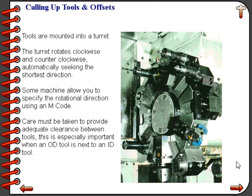It should be noted that a typical mistake most beginning programmers make is to select tool numbers based on their order of usage. For example, if their first tool is a turning tool they would call that tool 1, the second tool a drill and call it tool 2, and the third tool a boring bar called tool 3 — this is not the correct way to do it. You should try to pick dedicated stations on your turret for OD tools and ID tools. This allows you to decrease setup time by dedicating certain stations for very common tools, which is often developed over months or years of working with a CNC machine.